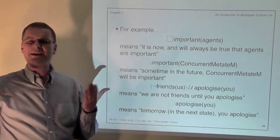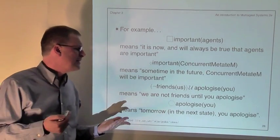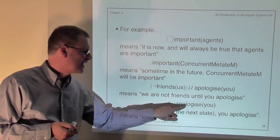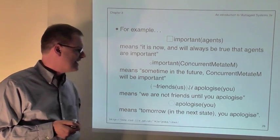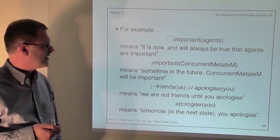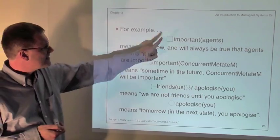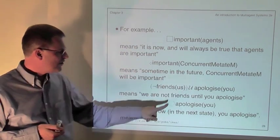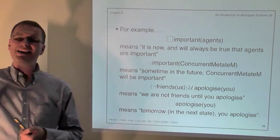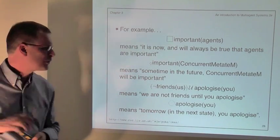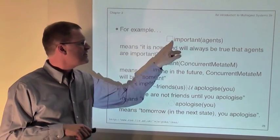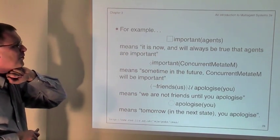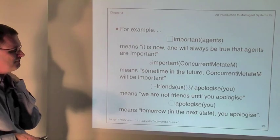Think of the next-state operator as meaning 'tomorrow' — or more precisely in Concurrent MetateM, the next decision cycle. So the operators — the empty box (always), the diamond (eventually), U (until), and the empty circle (next) — are temporal operators which we apply to formulas of classical logic to get what are called temporal formulas.